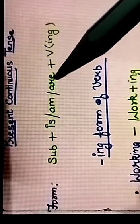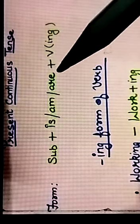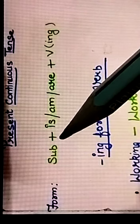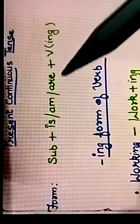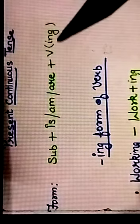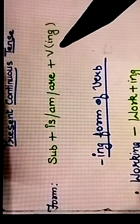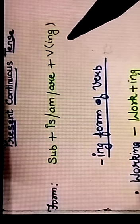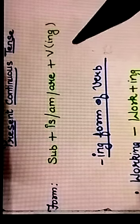So the form we use in present continuous tense is subject plus is, am, are plus ing form of verb. Now ing form of verb is very important because it is representing the continuity of the verb, continuity of the tense.